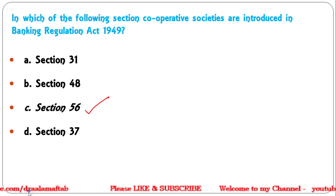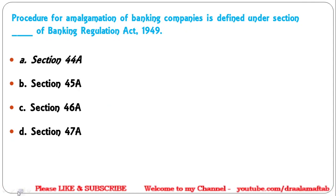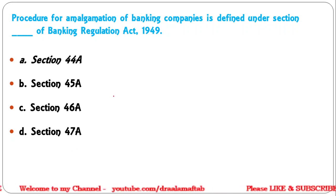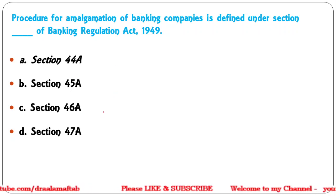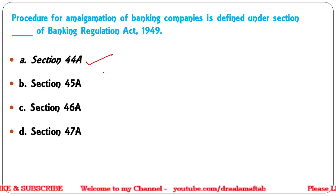Next question: The procedure for amalgamation of banking companies is defined under which section of the BR Act 1949? Options: Section 44A, 45A, 46A, or 47A. The correct answer is Section 44A — under Section 44A, the amalgamation procedure is given.